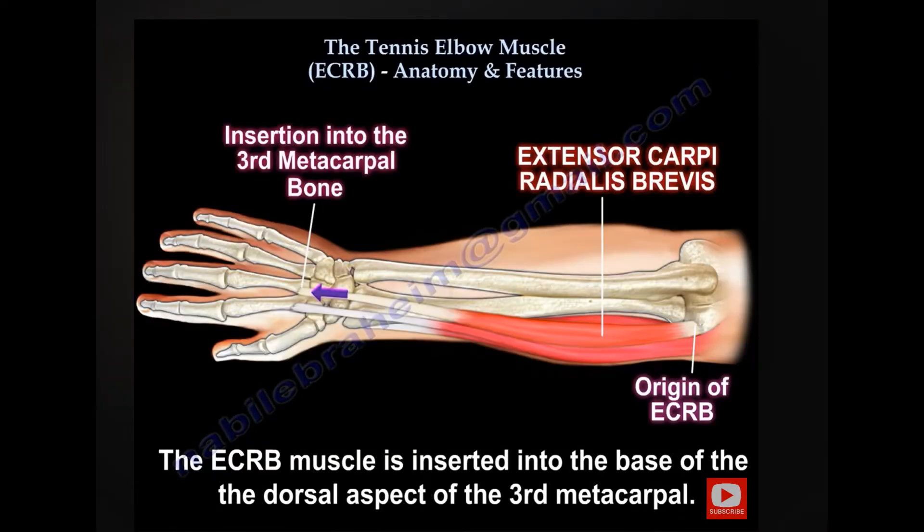Looking at the origin and the insertion of the brevis muscle — the short muscle, the tennis elbow muscle — it is inserted right in the middle of the hand. There is a lot of burden on this muscle, and probably the muscle can't handle it.